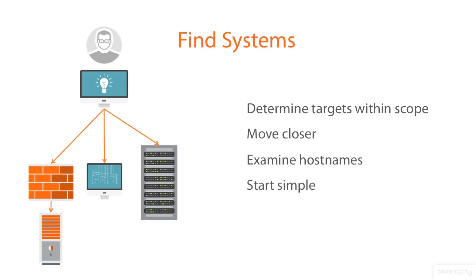Finding out if a system is still on the network often just requires the ping command to check. It sends an ICMP echo request to the target system and waits for an echo reply. A system that replies is connected to the network, and that is enough to know there's a working system associated with the IP address. Using ping doesn't always work when it's been disabled or blocked, so we may have to try other methods. Sometimes we have to get creative — this may require us to look for available services from systems in order to find them. We may not be able to ping them, but we know they exist because they offer services to which we can connect.